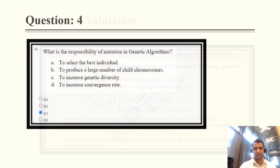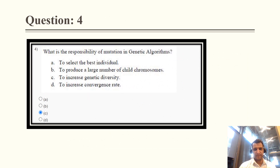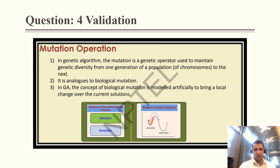Question 4: What is the responsibility of mutation in a genetic algorithm? Option A — to select the best individual — is not correct. Option B — to produce a large number of child chromosomes — is also not correct. Option C — to increase genetic diversity — is correct, because mutation changes characteristics from one population to the next, increasing diversity. Option D — to increase convergence — is not correct. The validation states: mutation is a genetic operation used to maintain genetic diversity from one generation to the next.